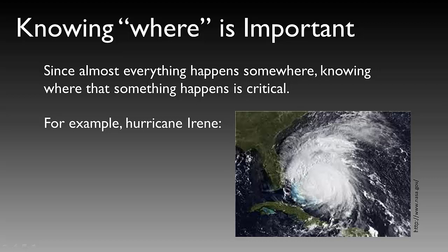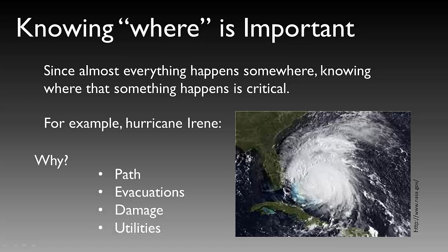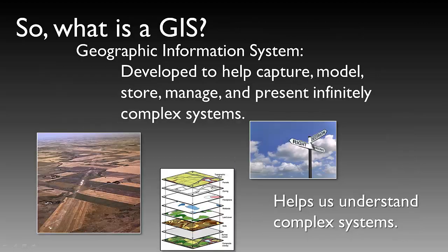Why would this be important? Because we need to know what path a storm is taking, where people should evacuate, what route they should take, what the anticipated or actual damage is, what utilities have been impacted, and how to get those utilities back online to minimize impact to the populace. So knowing where is critical to really understanding spatial analysis.